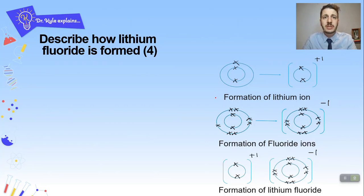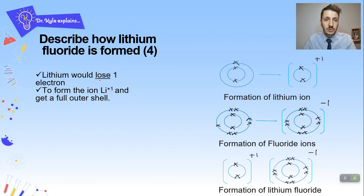For your GCSE, you need to be able to describe how lithium fluoride — or any ionic compound — is formed. If you follow this process every time, you will get top marks. First, talk about the formation of the lithium ion: lithium would lose one electron to form Li⁺ and get a full outer shell. It's really important to use the word 'lose' here. Lithium has lost its outer electron, forming a plus one ion. Always use the words 'lose' and 'gain' when describing ionic bonding.